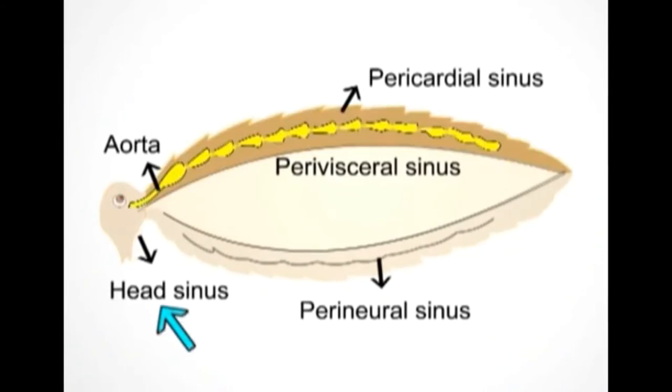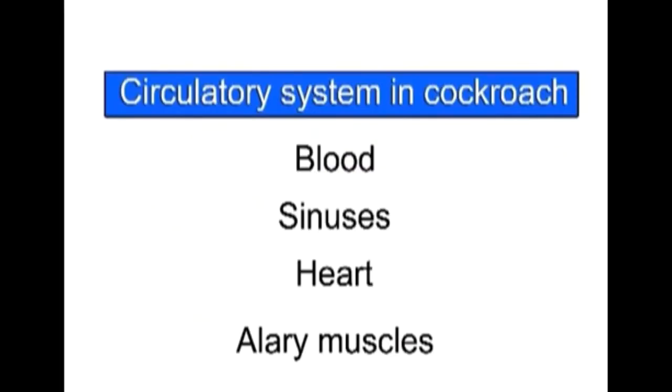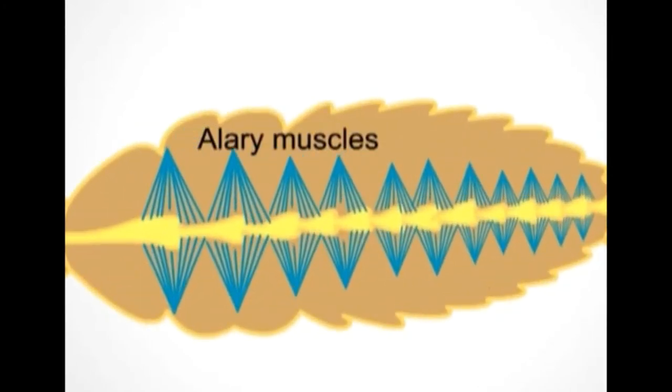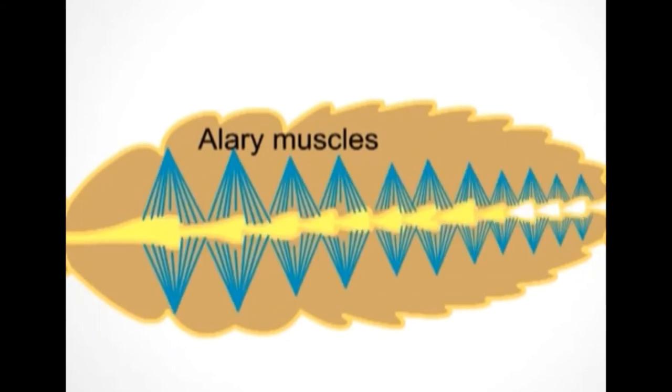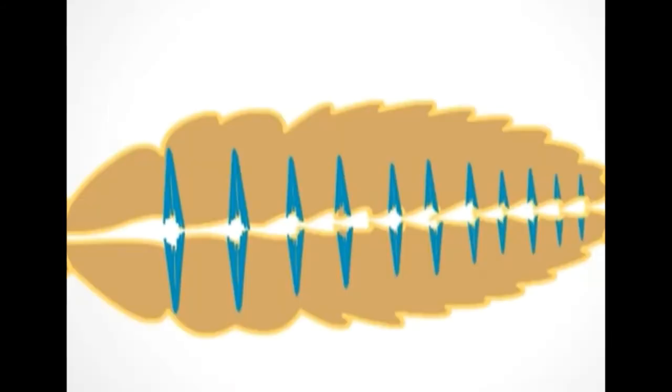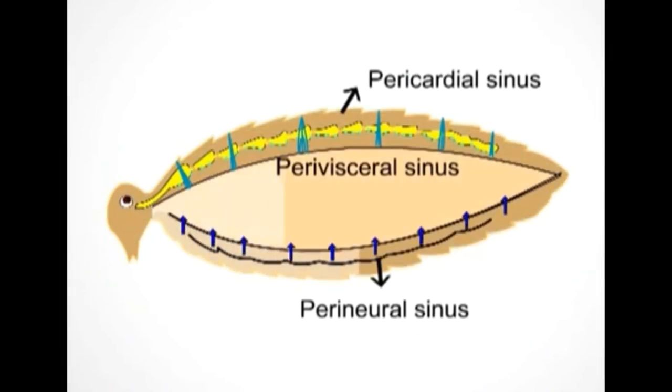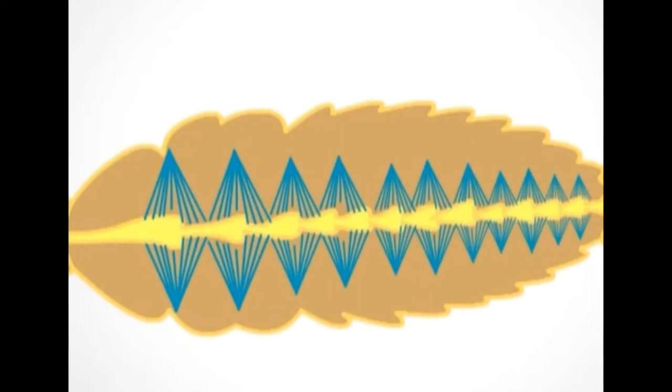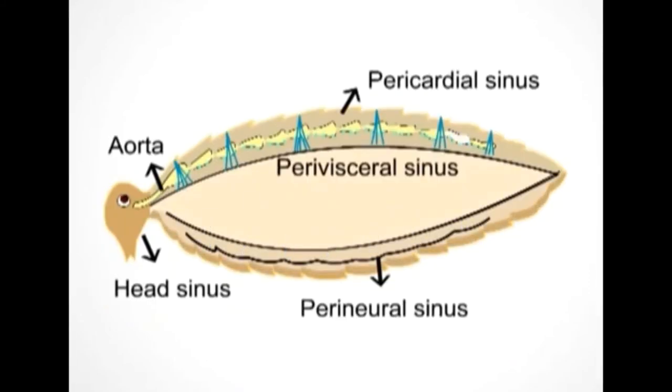Perivisceral sinus collects the blood from head sinus. Alary muscles are triangular-shaped muscles, and contraction and relaxation of these muscles are responsible for forcing the blood into heart circulation. When the alary muscles contract, blood flows from the body cavity (that is, the perivisceral and perineural sinuses) into pericardial sinus. When the alary muscles relax, blood flows from the pericardial sinus into the heart through pores called ostia.